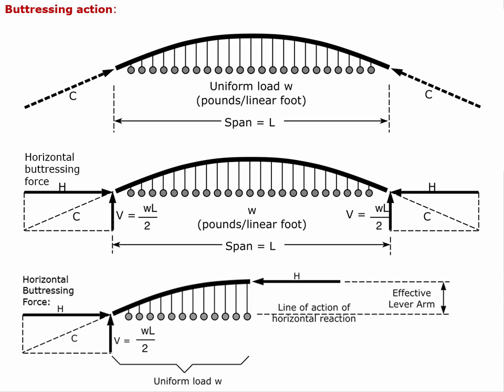If the arch becomes more shallow, the vertical force does not change, but the horizontal force must always adjust so that the net support force is axial on the arch. Taking half of the arch as a free body — slicing through and keeping the left half — we see that there are only two horizontal forces. Equilibrium requires that the horizontal force on the cut face be equal to the horizontal force at the support point.